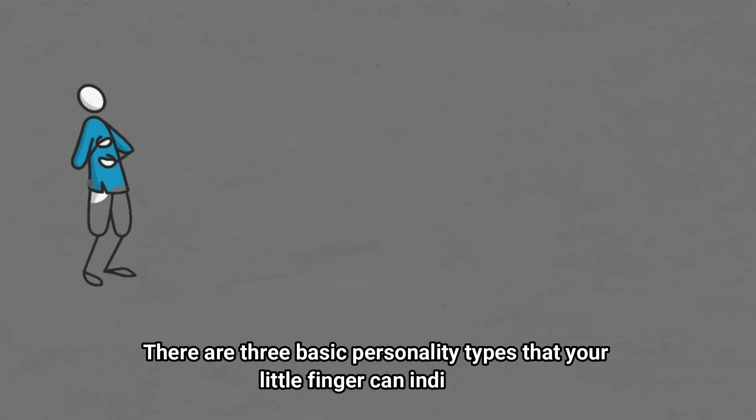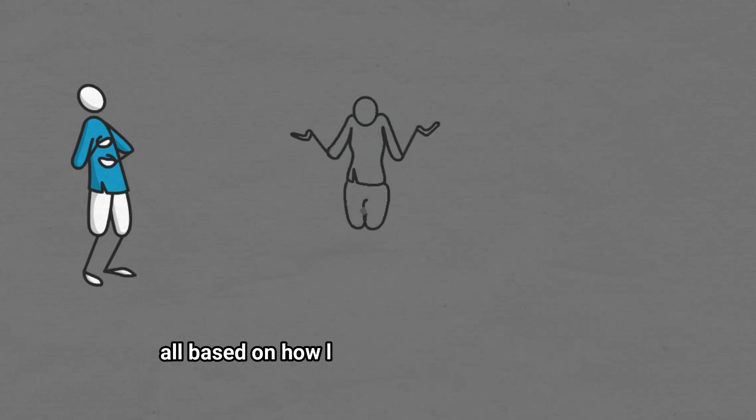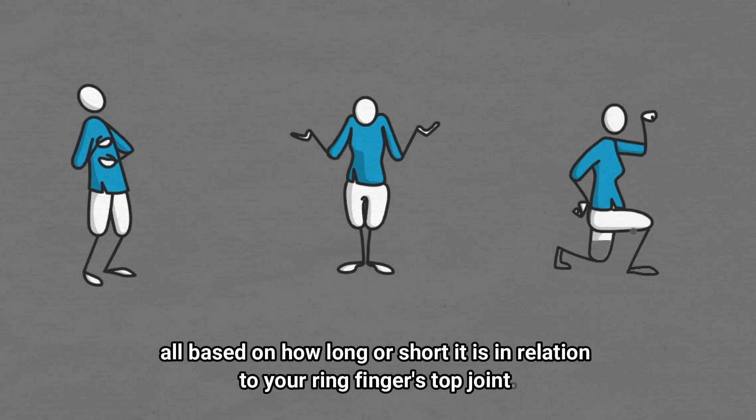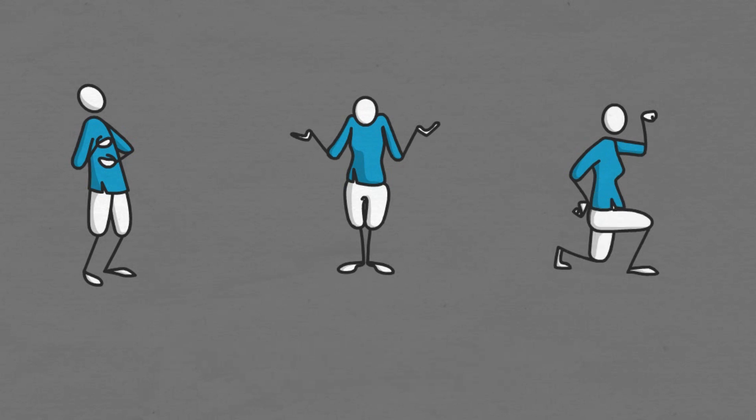There are three basic personality types that your little finger can indicate, all based on how long or short it is in relation to your ring finger's top joint. Let's know about them.